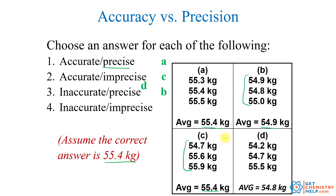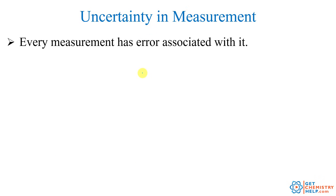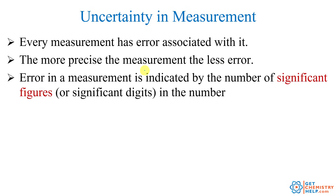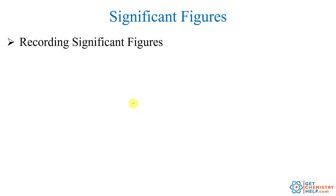The last one, D, is not accurate because the average of the three values is off target from the known value, and they're all spread out too — so that's inaccurate and imprecise. Whenever you make measurements in science, there's always going to be some degree of error associated with it — you can't make a perfect measurement with no error. The more precise the measurement is, the less error is contained in it. Error in a measurement is indicated by the number of what are called significant figures, or significant digits.